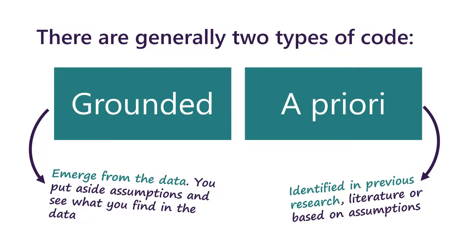There are generally two types of code: grounded or a priori. Grounded codes emerge from the data — you put aside your assumptions and see what you find. With a priori codes, however, you have previously identified some things that you are looking for. These could be based on literature or on some initial assumptions.